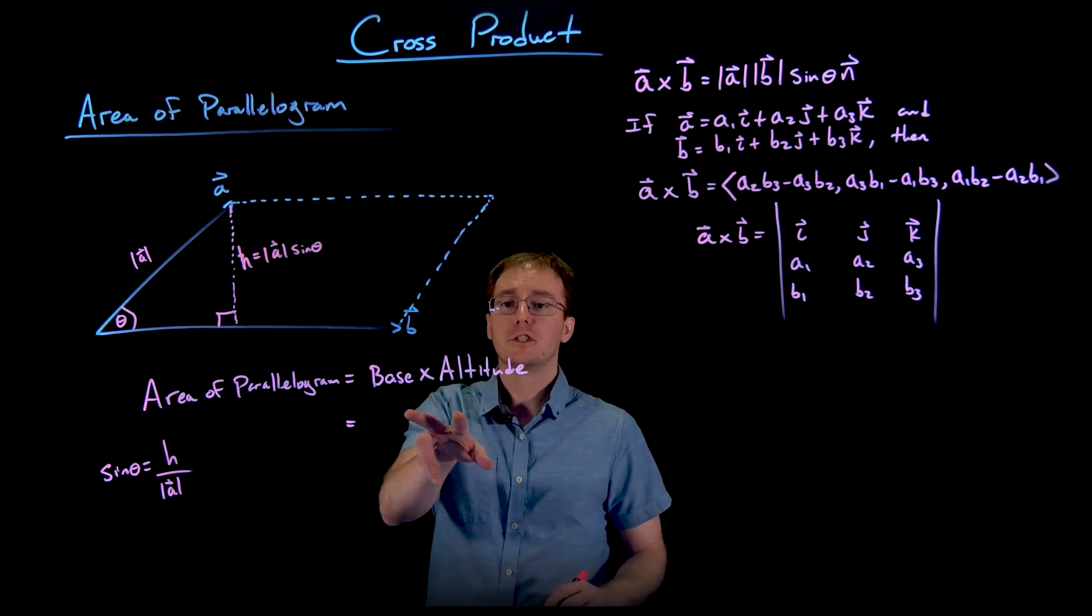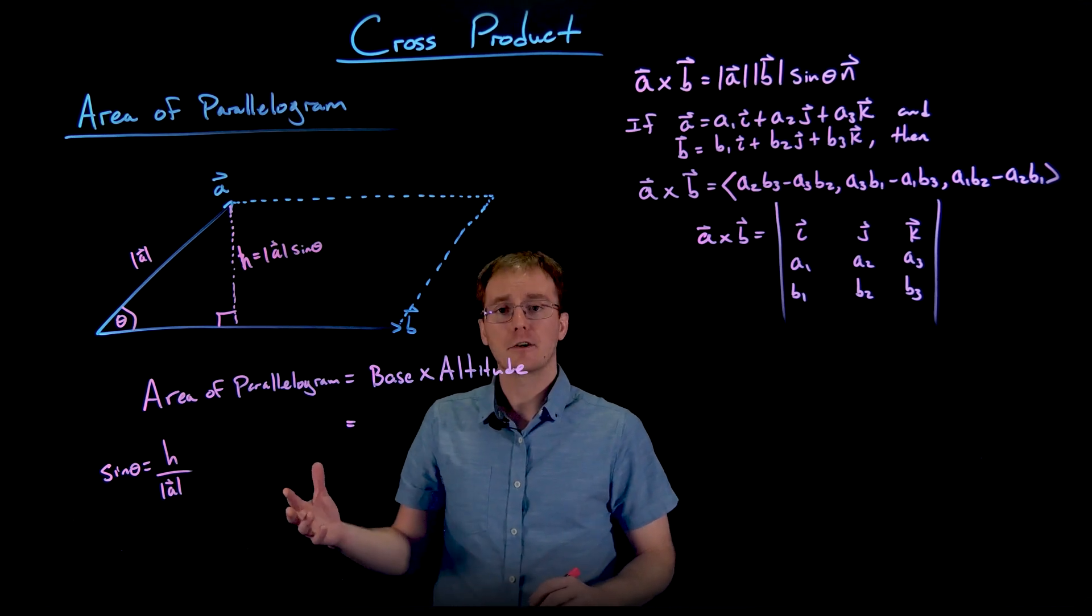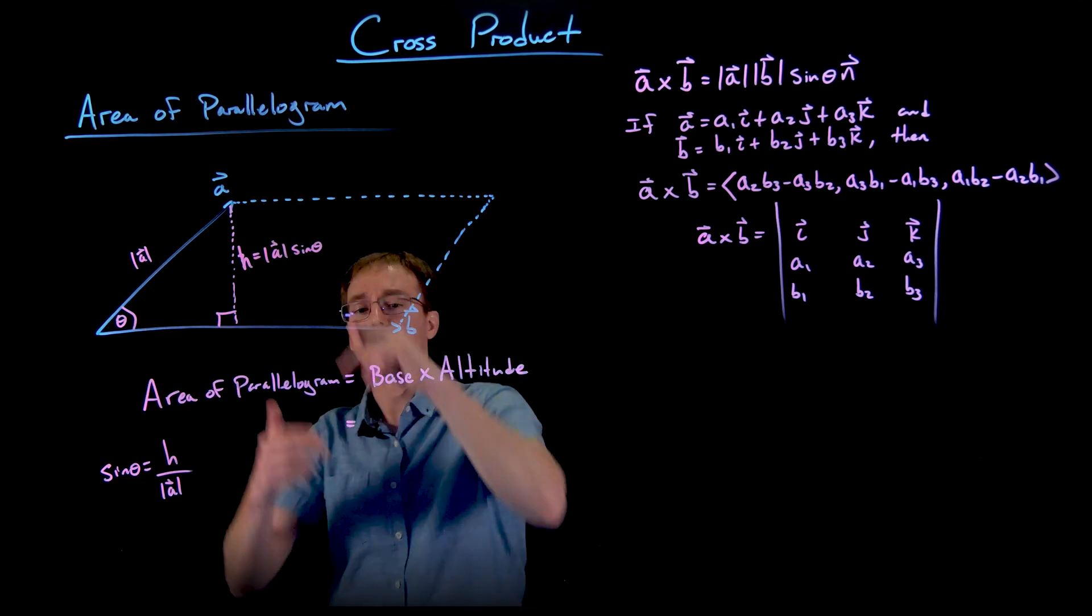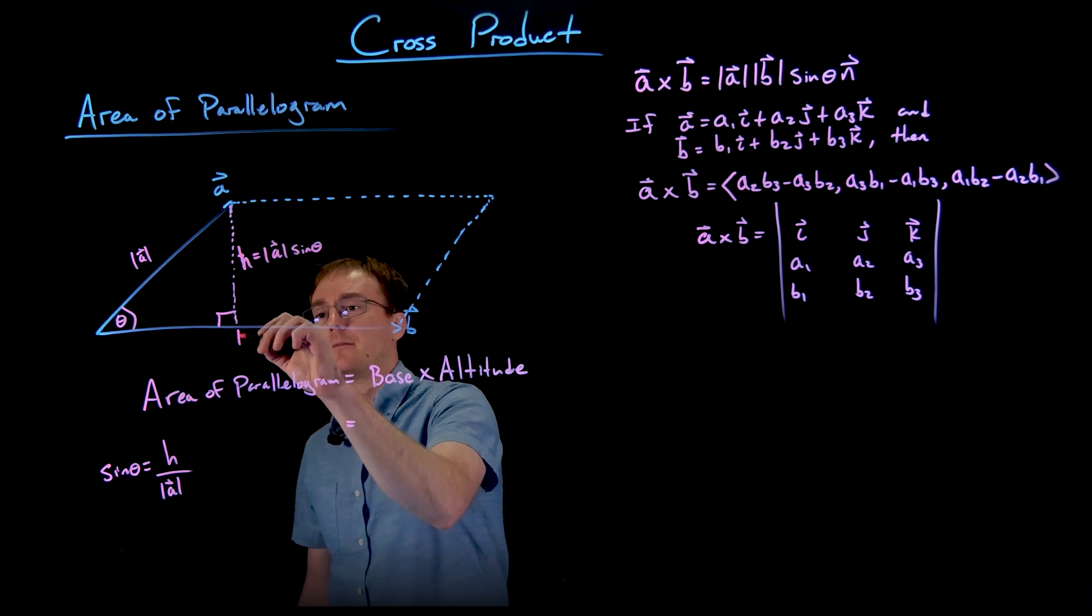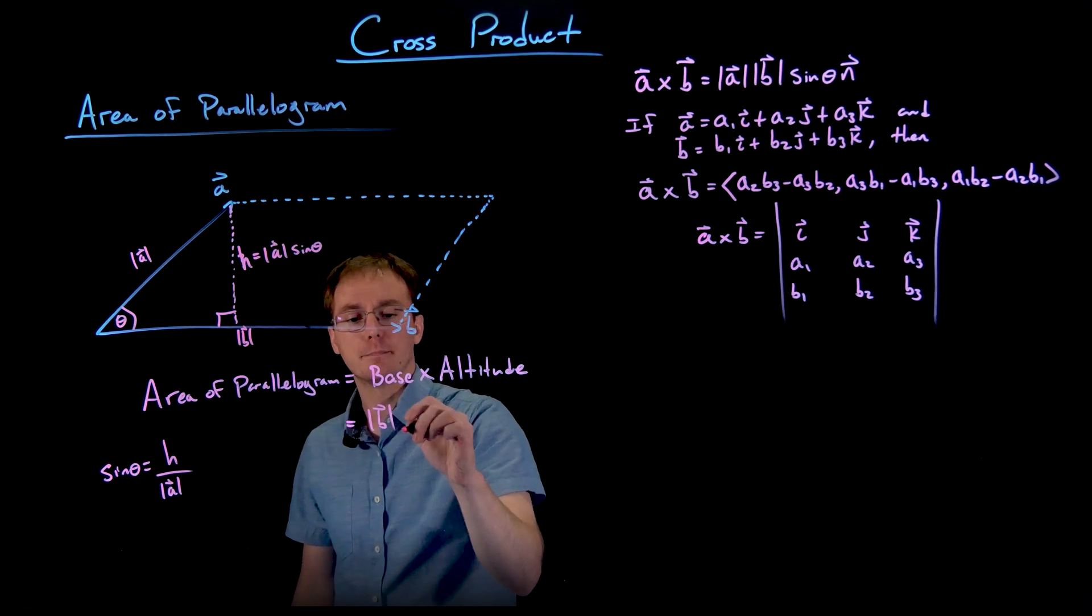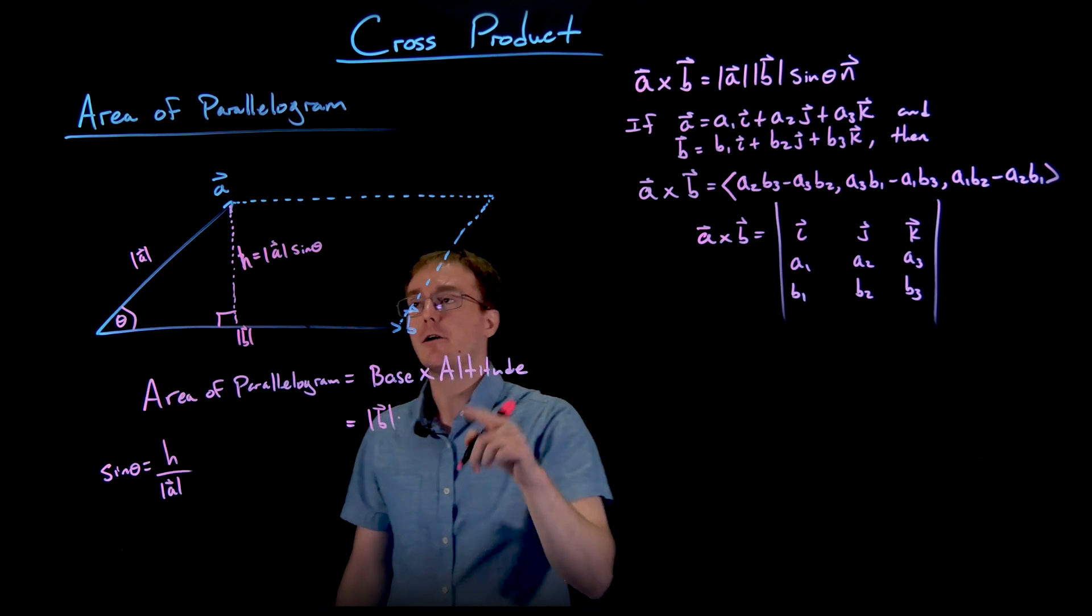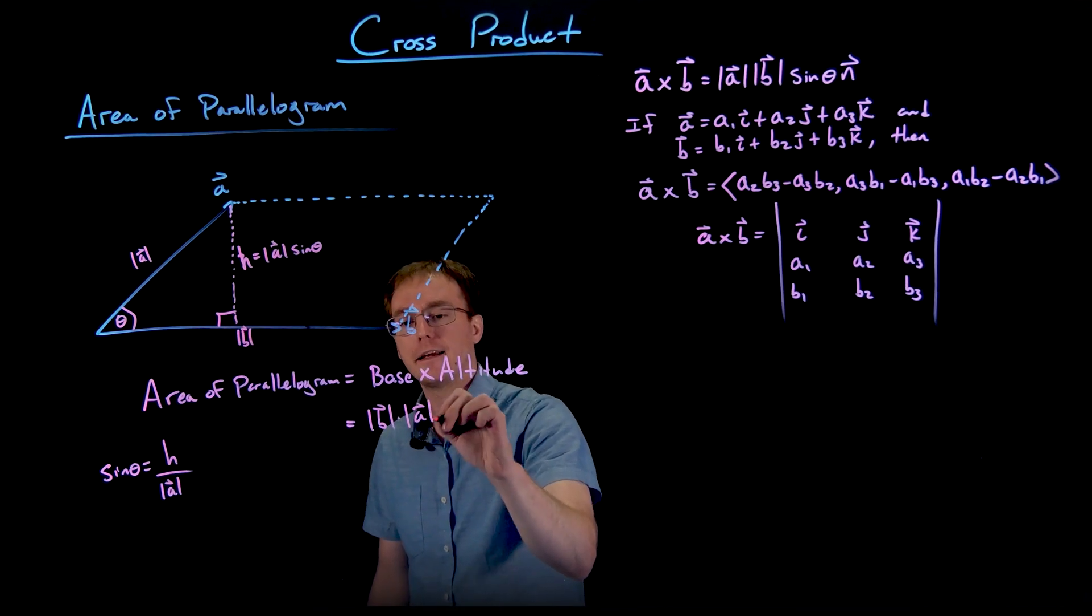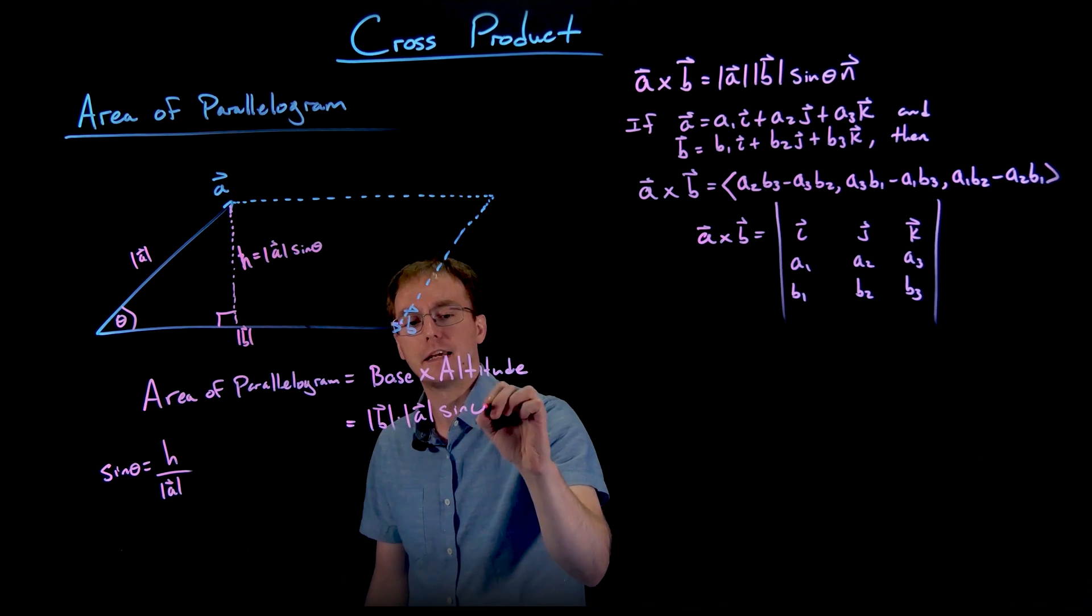So kind of plugging that information into our area of our parallelogram formula, the base times the height, well the base is going to be given by the length of our vector B, or the magnitude of our vector B, and we just saw that the altitude or the height is given by the magnitude of A times sine of theta.